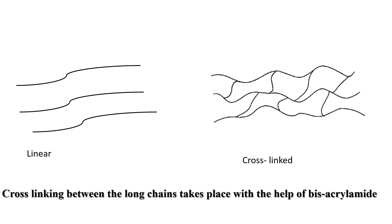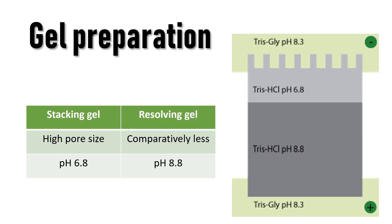The long chains that are formed must be cross-linked so as to form the gel matrix. This cross-linking between the long chains is carried out by bisacrylamide. The stacking gel has a low acrylamide concentration.